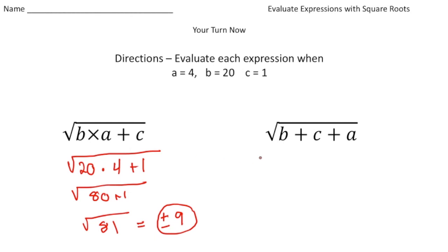All right for the second one we have the square root of b plus c plus a. So again let's evaluate by plugging in the values. So it's going to be a 20, 20 plus c is 1 plus a is 4. And when I simplify that all we're doing is adding. So that's going to be 25. And the square root of 25 is plus or minus 5.